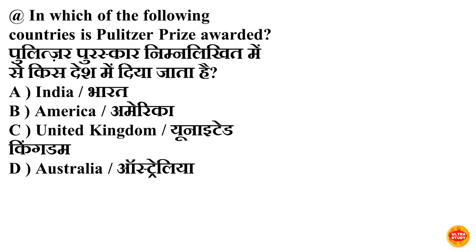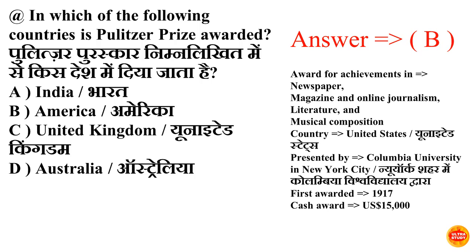Next question: in which of the following countries is the Pulitzer Prize awarded? Pulitzer purashkar inme se kis desh mein diya jata hai? Option B is correct — America. Pulitzer Prize diya jata hai newspaper, magazine, online journalism, literature, aur music composition ke liye. Pulitzer Prize diya jata hai United States mein, Columbia University dwara. Pahala award diya gaya tha 1917 mein.